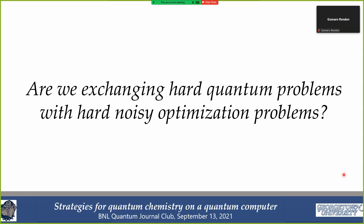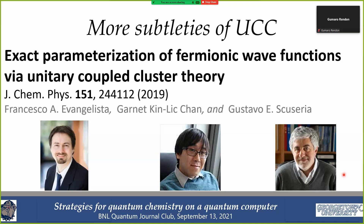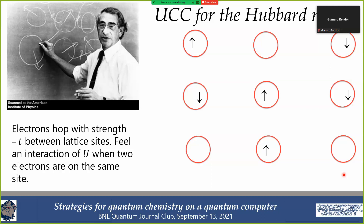There are extra subtleties of UCC discussed in a nice paper by Evangelista, Chan, and Scuseria. Even with some constraints, there's a lot of flexibility. To illustrate this, we apply the unitary coupled cluster approximation to the Hubbard model. If you're a chemist you probably don't know what a Hubbard model is; if you're a physicist you're quite familiar. We have electrons on a lattice with hopping parameter -t and an on-site interaction U when two electrons of opposite spin occupy the same site.